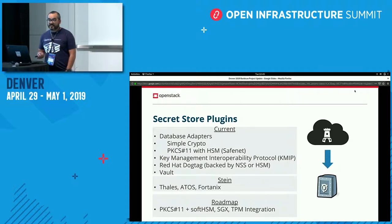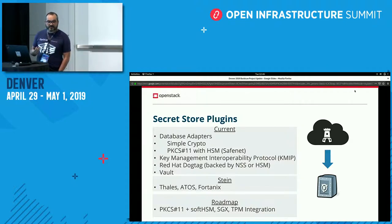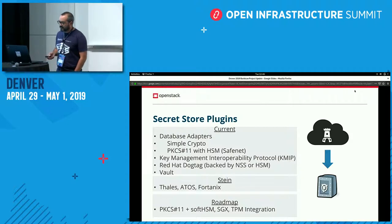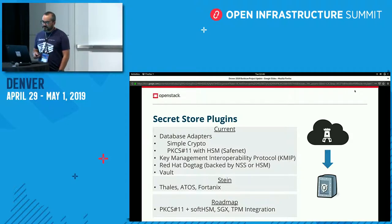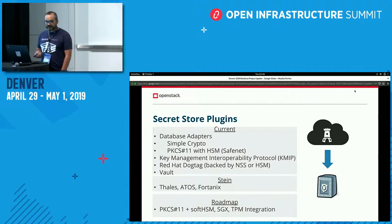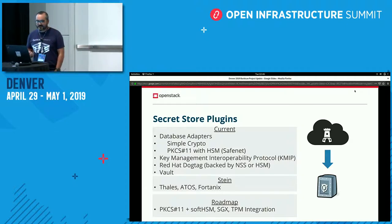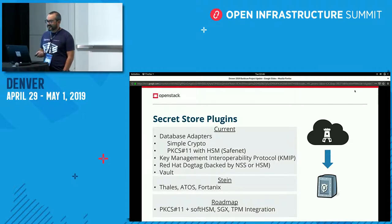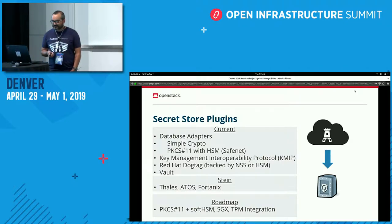On the roadmap, we really want to get a SoftHSM gate set up so that we're also testing upstream. Red Hat is doing a lot of downstream testing of the PKCS11 backends, but we would like some upstream testing as well to catch potential bugs earlier in the lifecycle. We're also still interested in SGX and TPM integration, though similar to the KMIP backend there's not really anybody pushing for it right now. If that's something you're interested in, let us know — that would be cool.